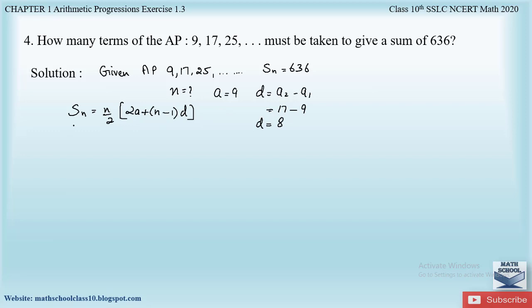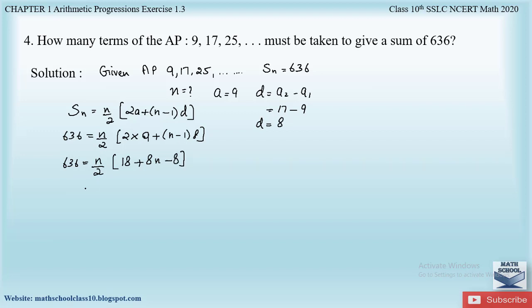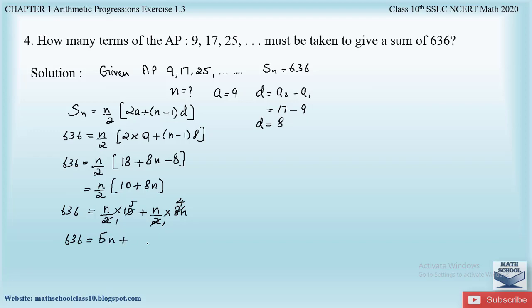Now substitute all values to find n. 636 = (n/2) × (2×9 + (n−1)×8) = (n/2) × (18 + 8n − 8) = (n/2) × (10 + 8n). Opening the bracket: 636 = 5n + 4n². This is a quadratic equation.